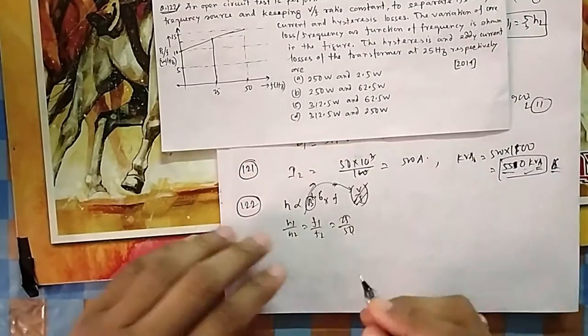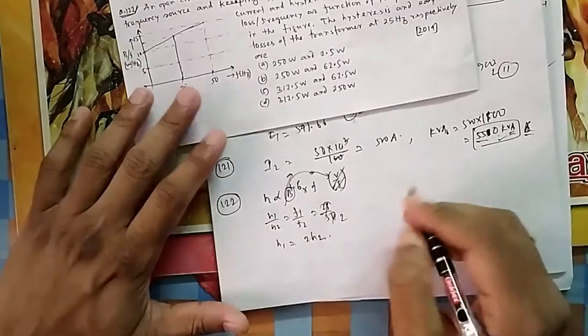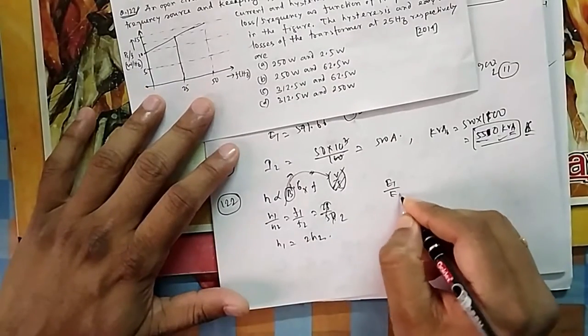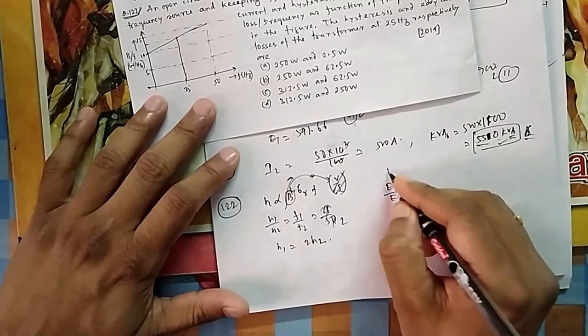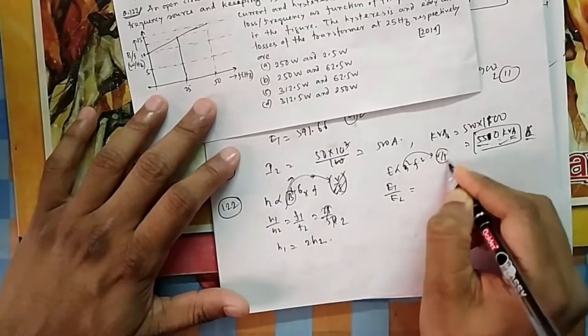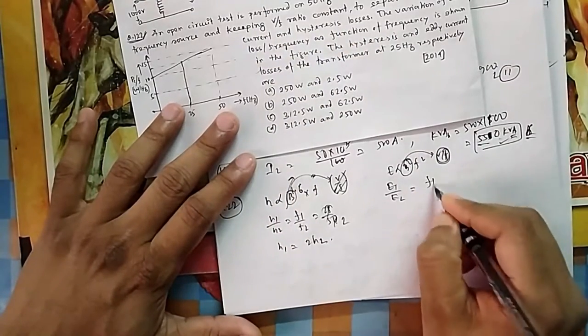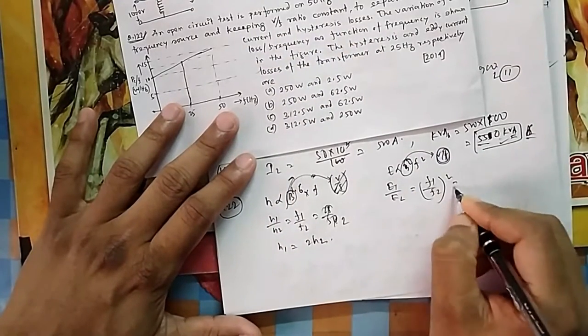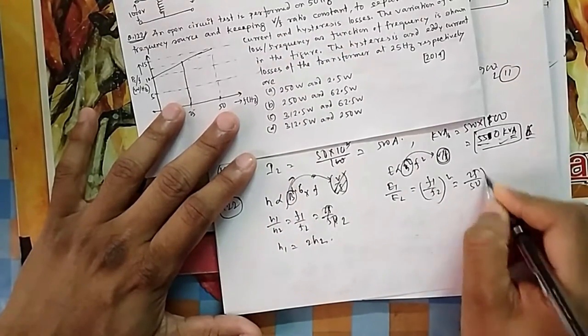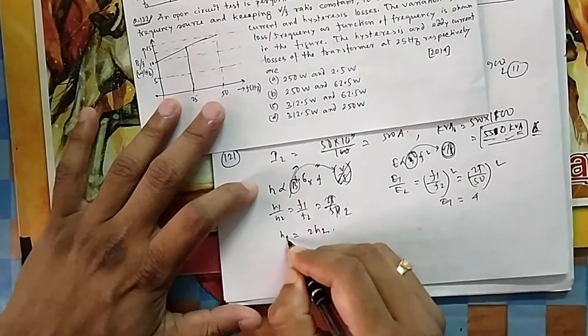So that is 25 by 50. If I take one case as 50, because 50 is given, I have to find at 25. So suppose this is your H1, this is your H2. So your H1 will be equal to H2 divided by 4. Similarly, your E1 by E2 - eddy current loss is proportional to B square times f square. Now B is proportional to V by f. Because V by f is kept constant, this B is kept constant, so it will be simple f1 by f2 whole square.